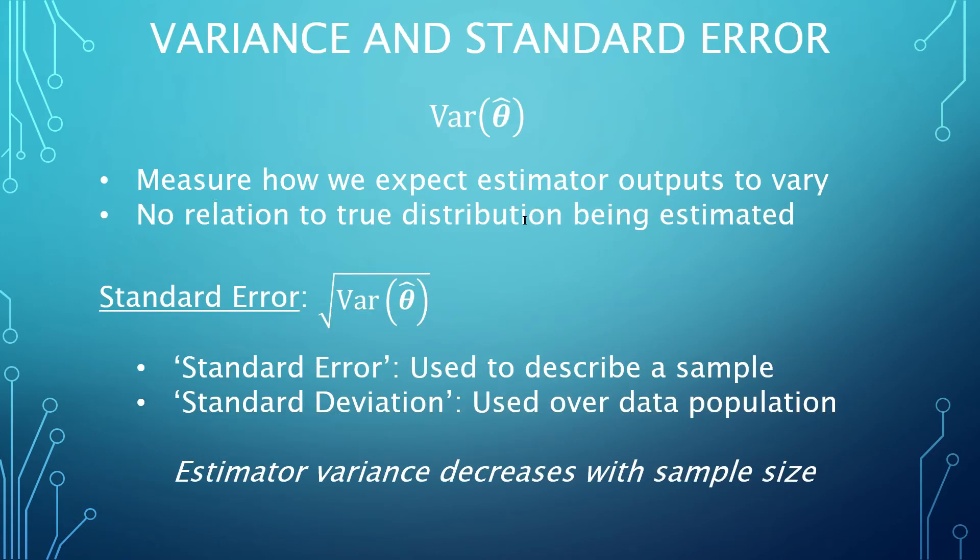Just as we would compute variance for a given probability distribution, the variance and standard error of an estimator is also an important characteristic to have in mind. While bias results from the comparison of an estimator against the process being estimated, an estimator's variance is purely a byproduct of the nature of the estimator itself, and isn't computed with reference to the process being estimated.